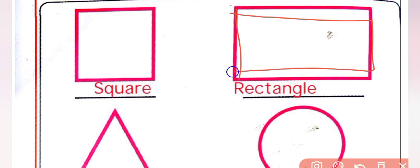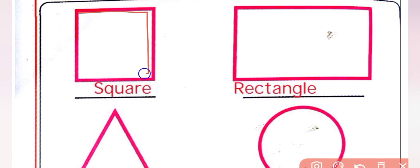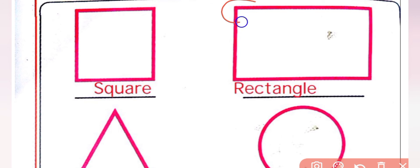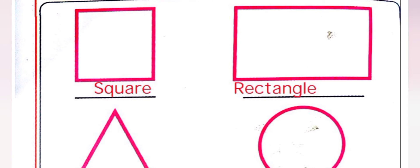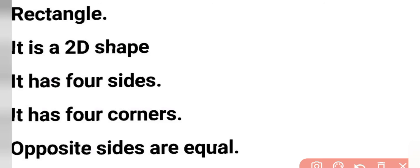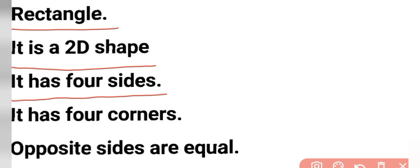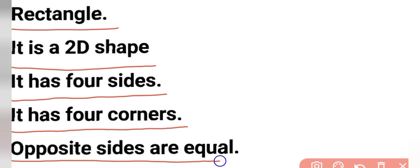Next shape — this shape is called rectangle. The name of this shape is rectangle. In a rectangle, opposite sides are equal. What are the properties of a rectangle? It is a 2D shape. It has 4 sides. It has 4 corners. Opposite sides are equal.